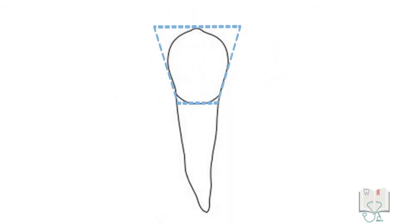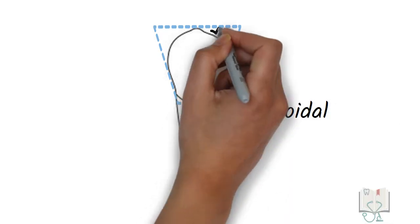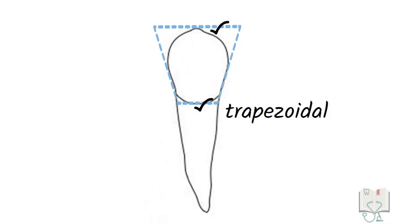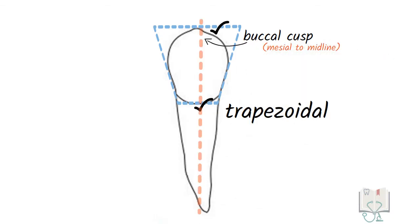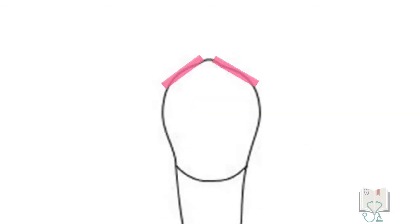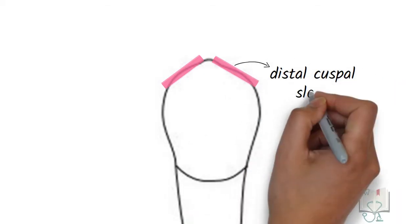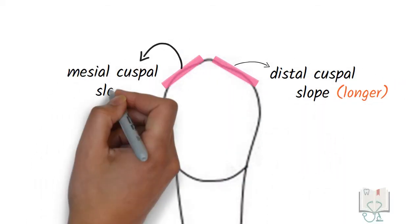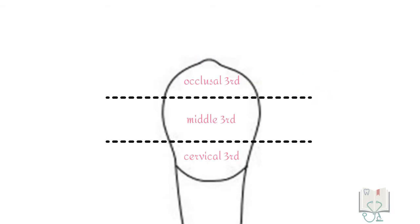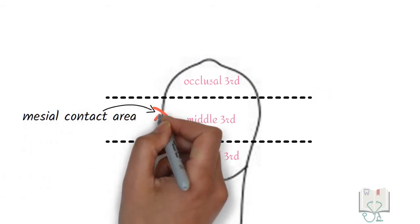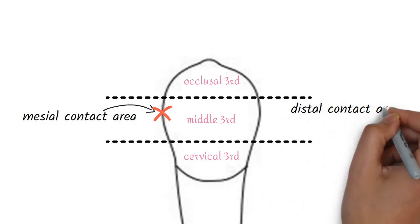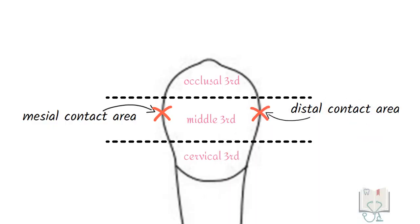From the buccal aspect, the outline form of the crown is trapezoidal, with its longer side towards the cusp and shorter side towards the root. Only the buccal cusp is visible, as the smaller lingual cusp hides behind it. The tip of the buccal cusp is slightly mesial to the midline axis of the tooth. The distal cuspal slope is longer than the mesial cuspal slope. Both the mesial and distal contact areas are in the middle third.